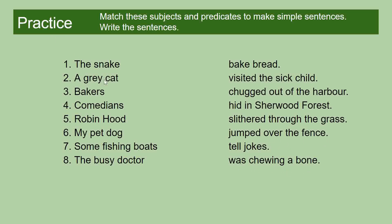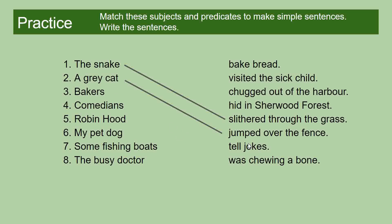The snake slithered through the grass. The verb in the predicate is 'slithered,' and the other noun in the predicate is 'grass.' Number two: a grey cat jumped over the fence. The verb in the predicate is 'jumped,' and the noun is 'fence.'